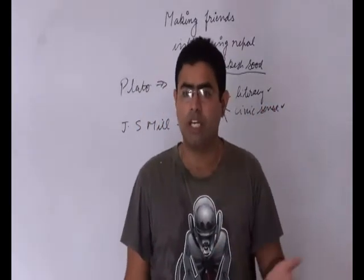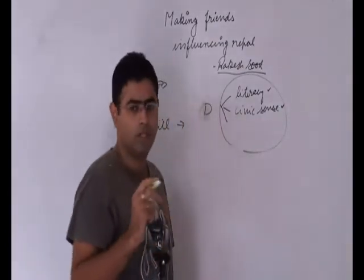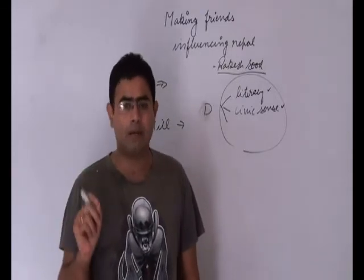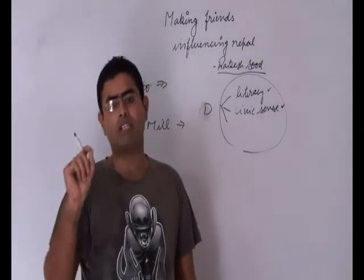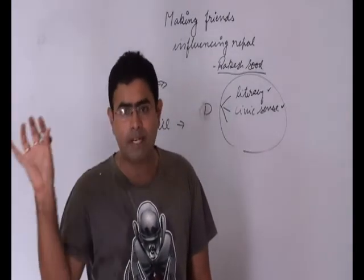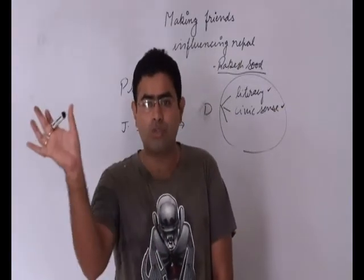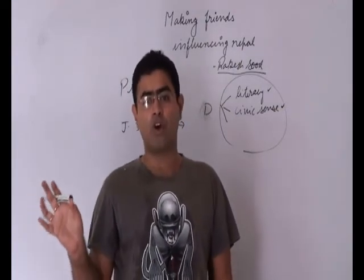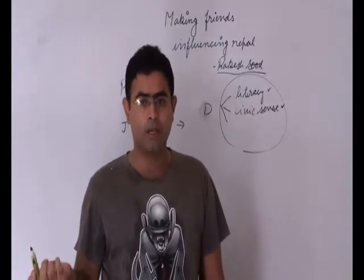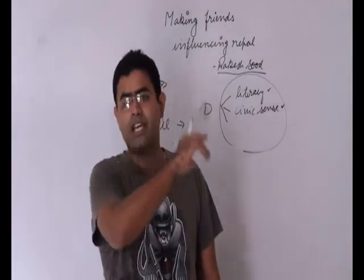This is what John Stuart Mill wanted to convey - before you set up this democracy you must create these three conditions. The people should not show their dissent and disenchantment. If they will be doing that, democracy will not be able to yield the results. You will not be able to get development out of democracy. Democracy will give you development only if you are educated, if you have a civic sense, and if you are not showing dissent. You should learn to live together, you should learn to respect the liberty of the others.